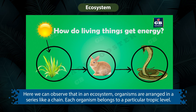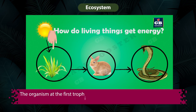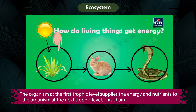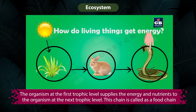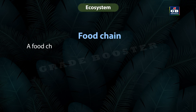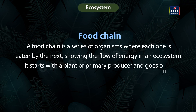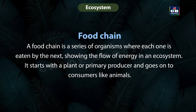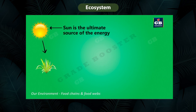In an ecosystem, organisms are arranged in a series like a chain, where each organism belongs to a particular trophic level. The organism at one trophic level supplies energy and nutrients to the organism at the next trophic level. This chain is called a food chain — a series of organisms where each one is eaten by the next, showing the flow of energy in an ecosystem.